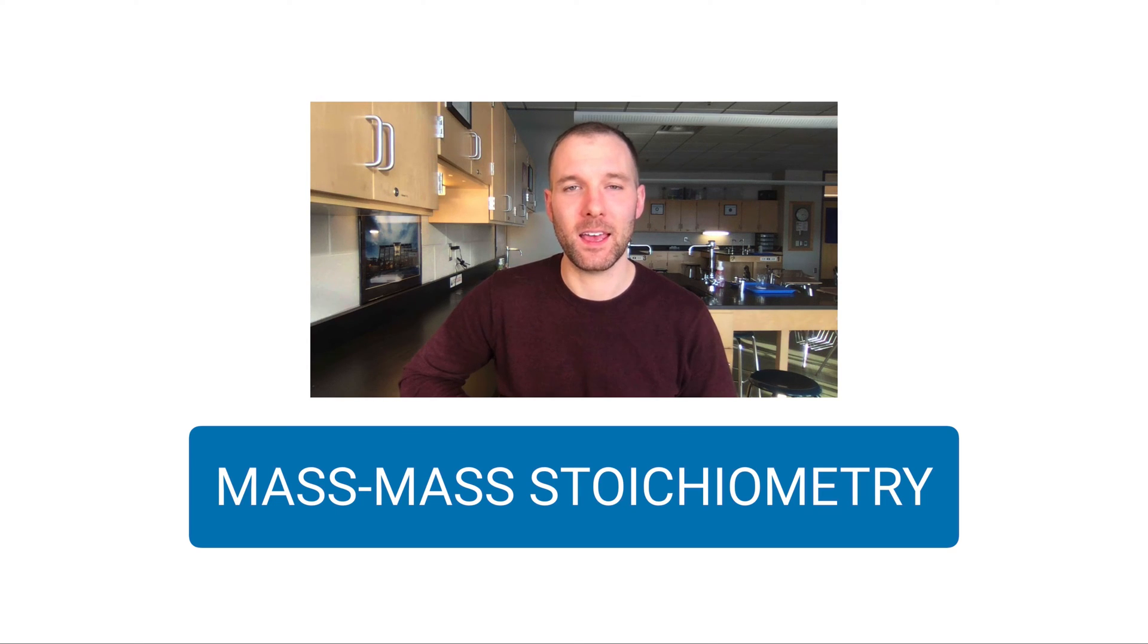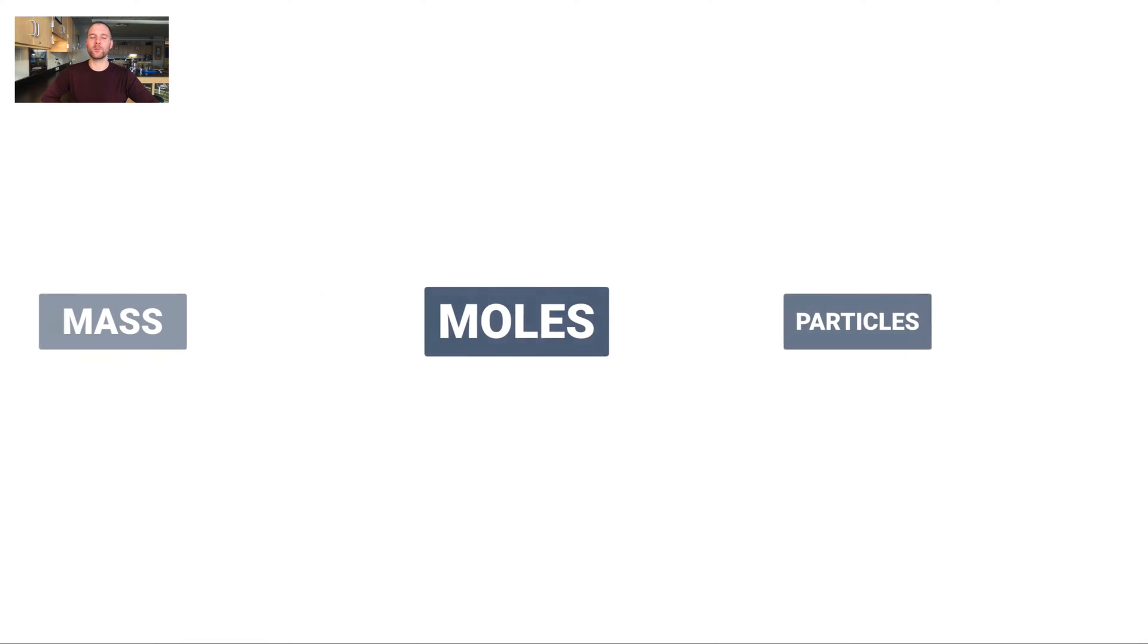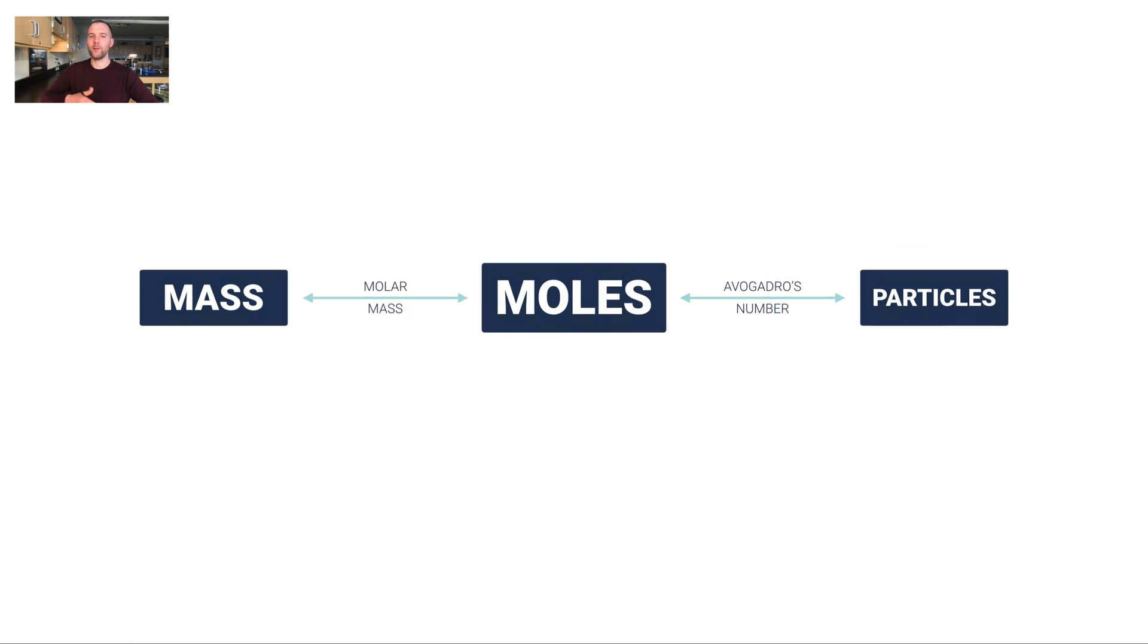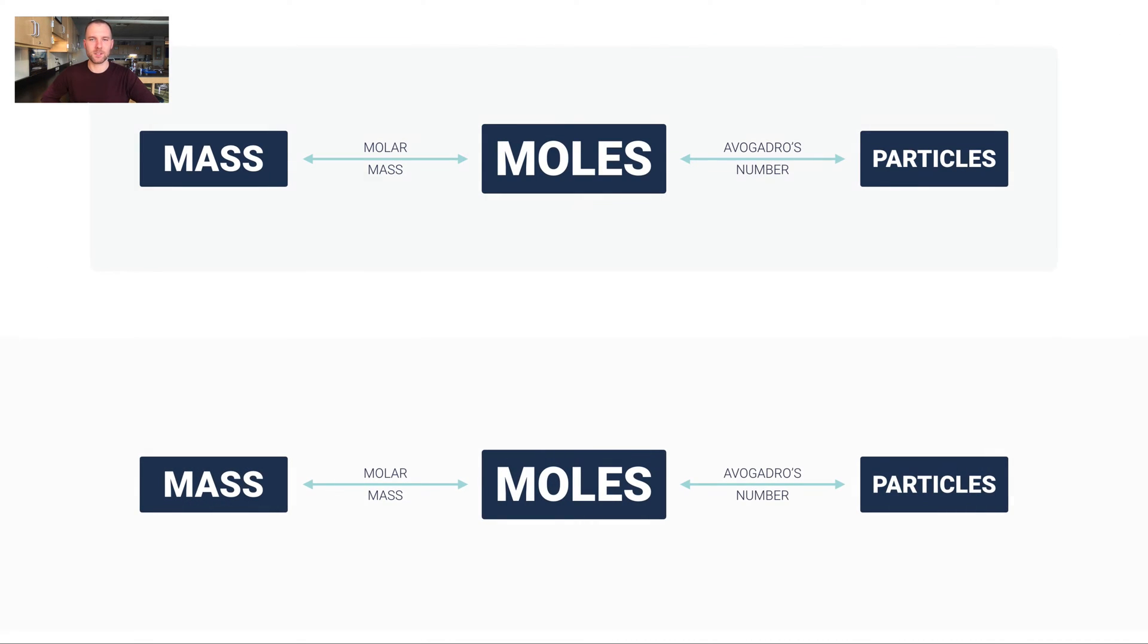For that you really need three conversion factors. Let me show you what I mean. You may remember from Unit F that we had this kind of map here where moles is in the center. If I want to go from moles to mass, I need to use the molar mass of a substance. To go from moles to particles, I need to use Avogadro's number. In this unit we're looking at comparing quantities of two different substances. So let's say I brought in another identical copy of this exact kind of map here. The way to get between moles of one thing and moles of something totally different is to use the molar ratio.